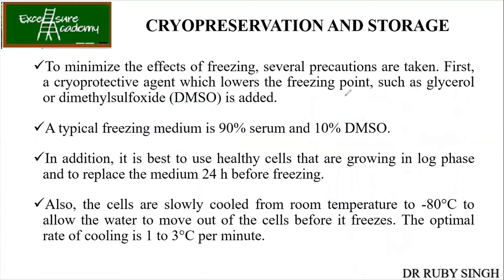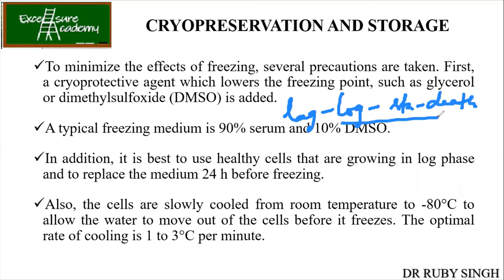Just as in the case of bacterial growth curve — you know there is a lag phase, then log phase, then stationary phase and death phase — similarly, in animal cells also we have lag, log, stationary, and death phase. So whenever you want to do your freezing or make your stock, you are going to use the log phase culture.